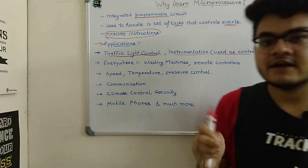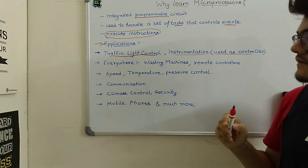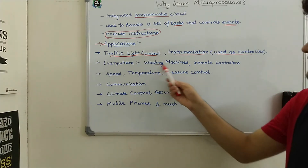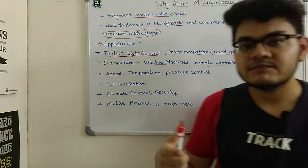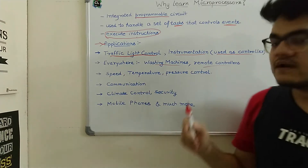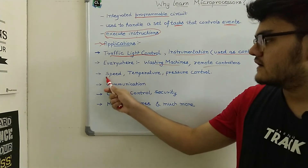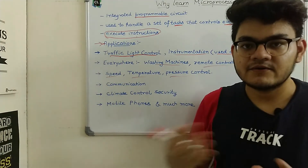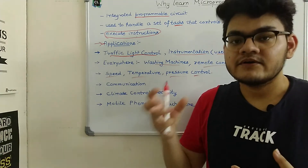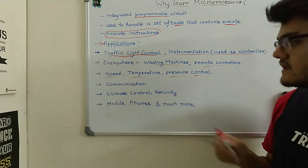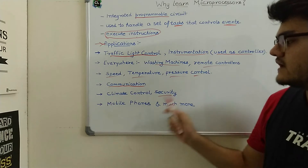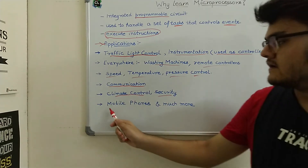In instrumentation, microprocessors are used as controllers — for example, frequency controllers. They are also used in washing machines and remote controllers. For speed, temperature, and pressure control, microprocessors are used to manage these parameters, which is why we sometimes also call microprocessors microcontrollers when they are controlling things like speed or temperature.